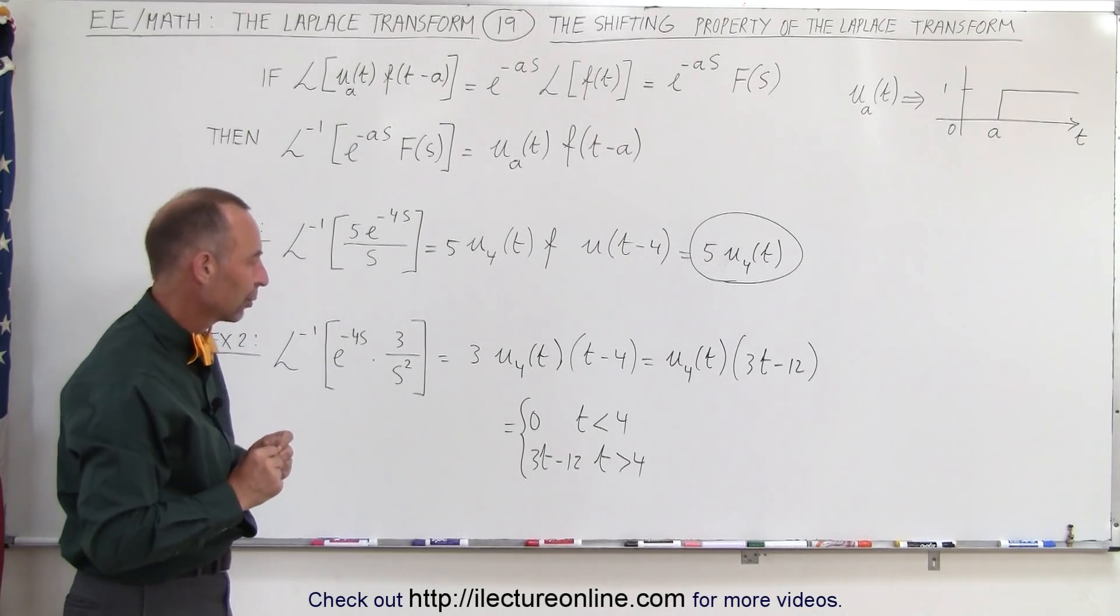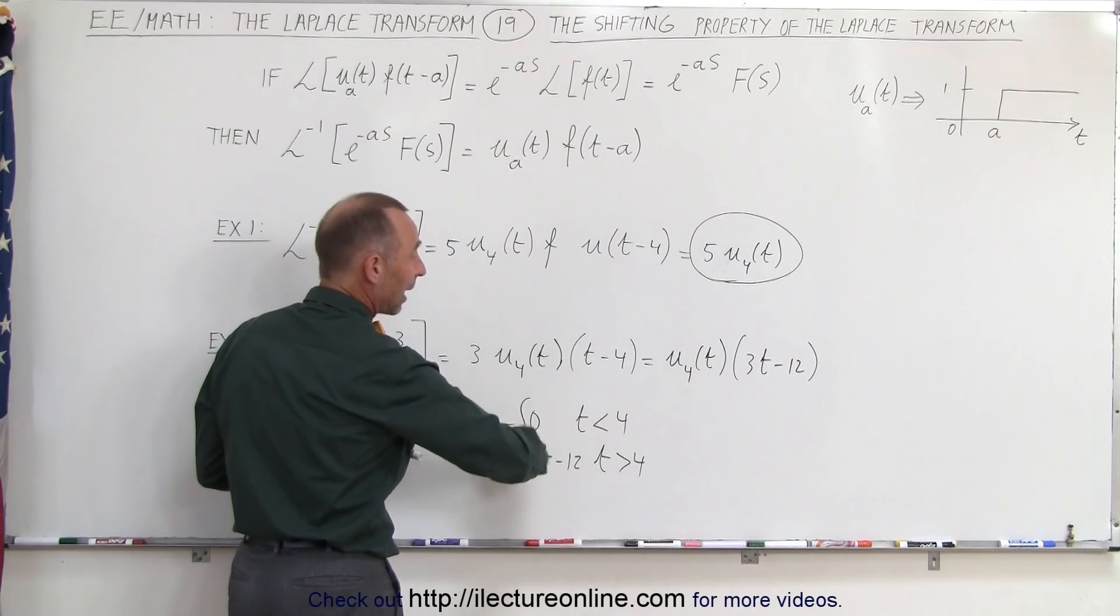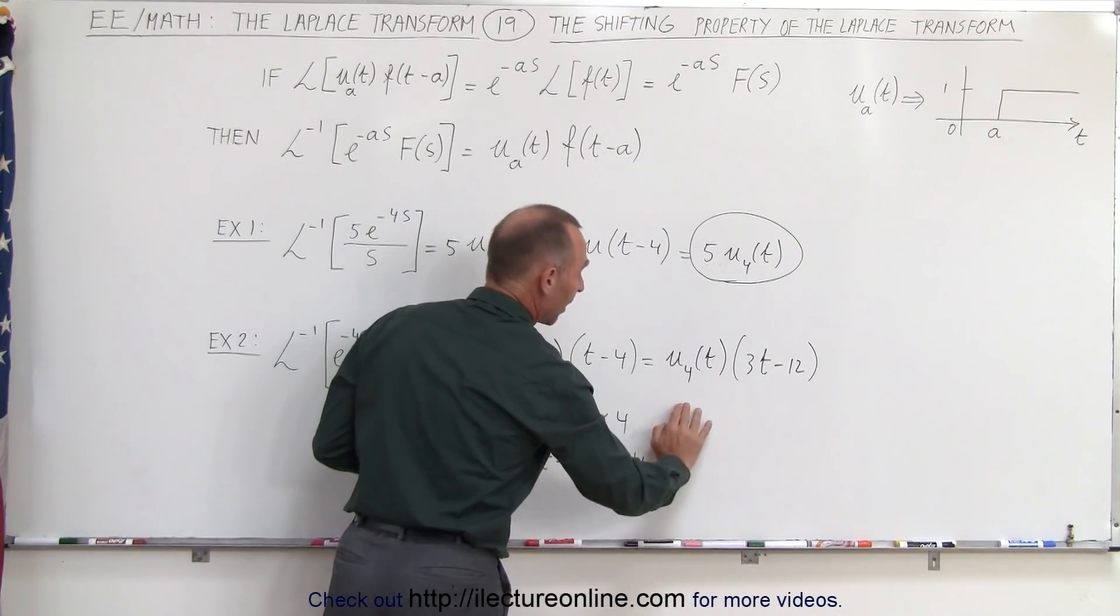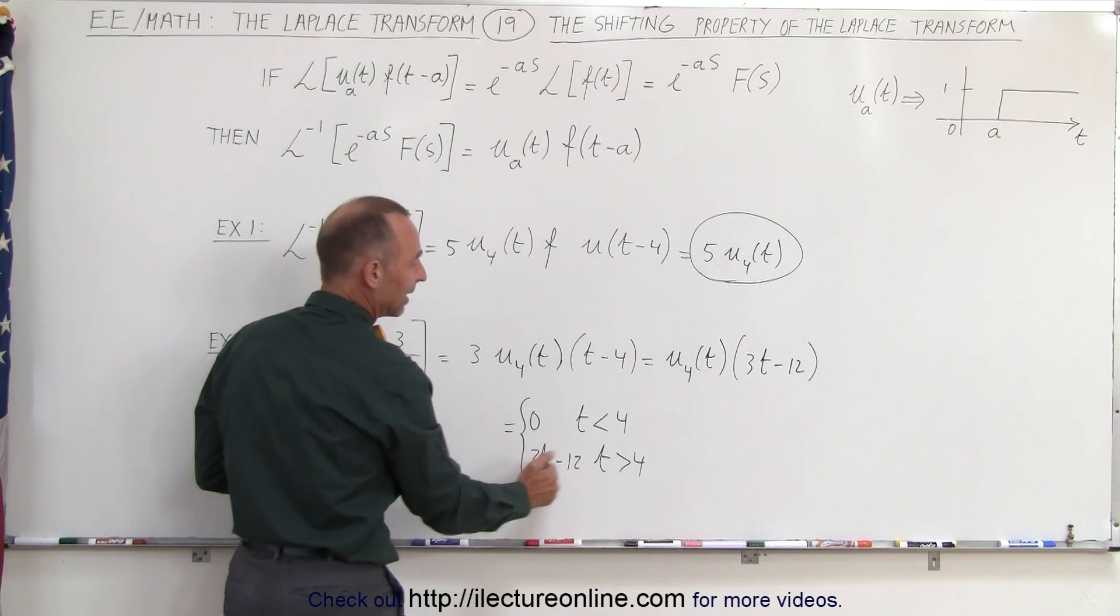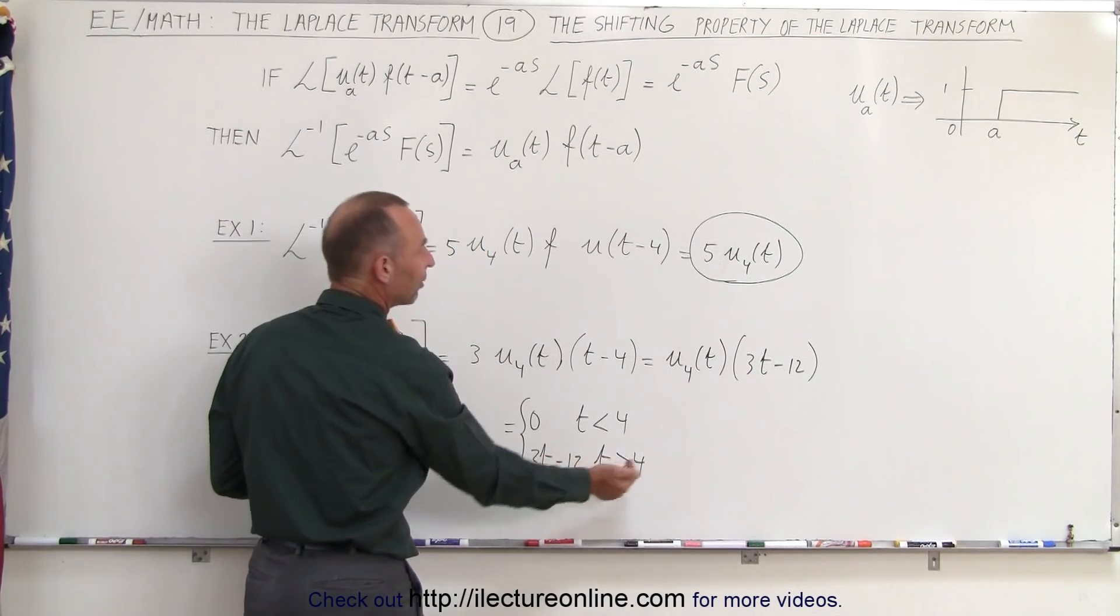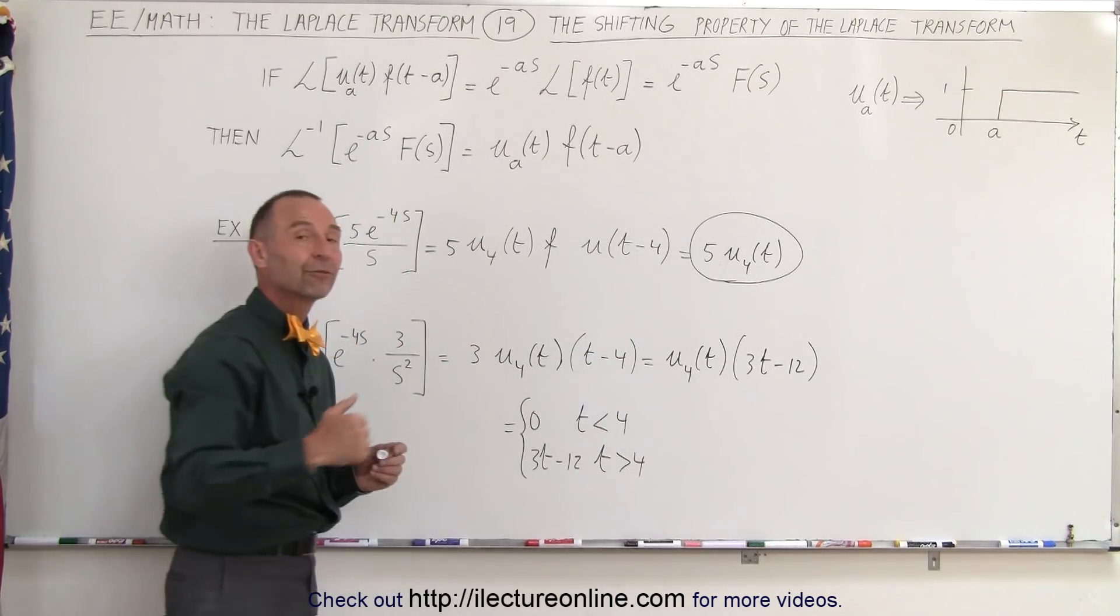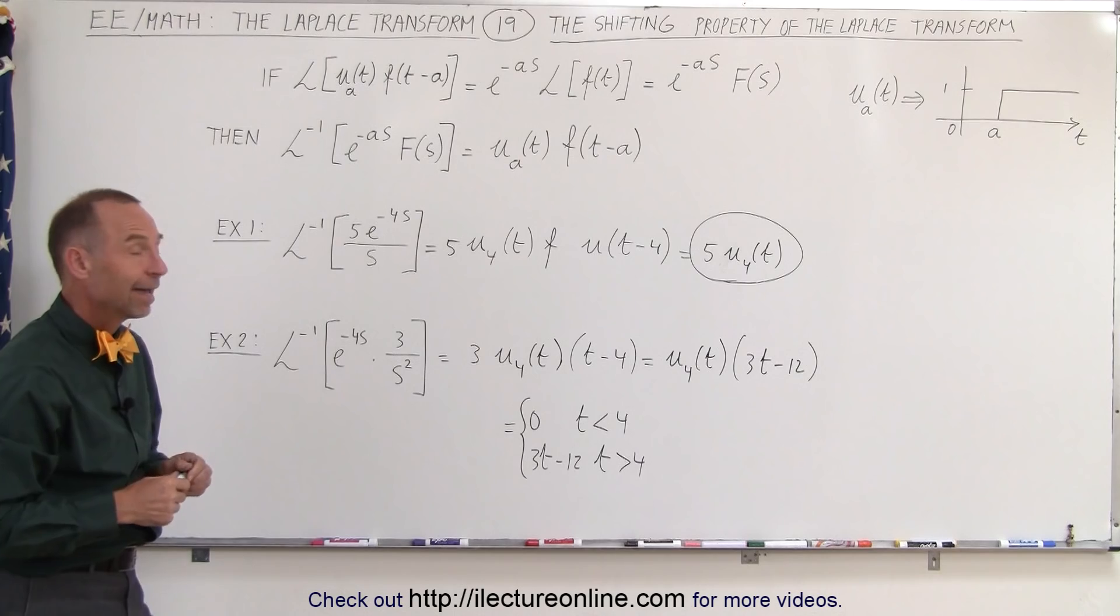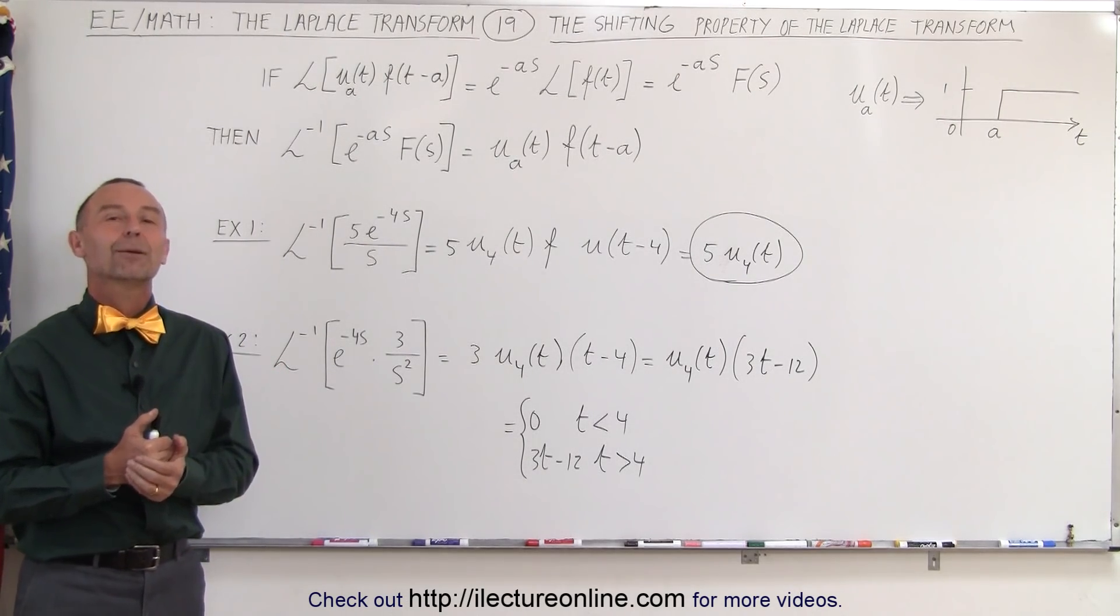Of course, greater or equal to 4 seconds really when we think about it. That means that nothing happens, there's actually zero response for time less than 4 seconds because it's been delayed by 4 seconds. And after 4 seconds have elapsed, then the function becomes 3t minus 12 because we have to inverse transform it to t minus 4 instead of inverse transform to just t. And that's how we apply what we call the shifting property of the Laplace transform.